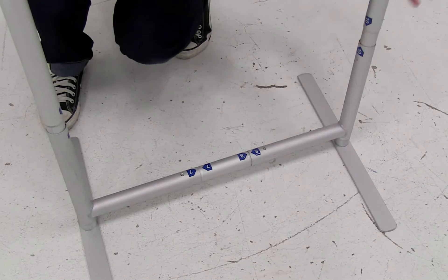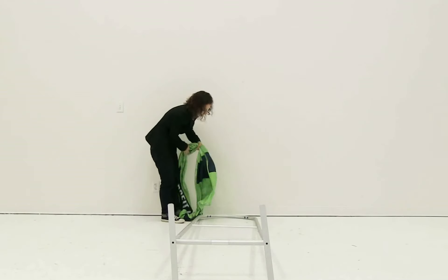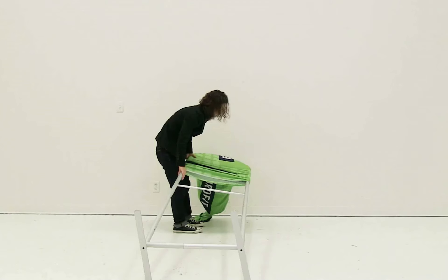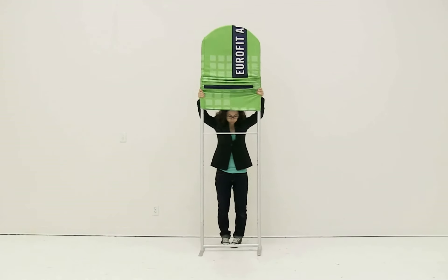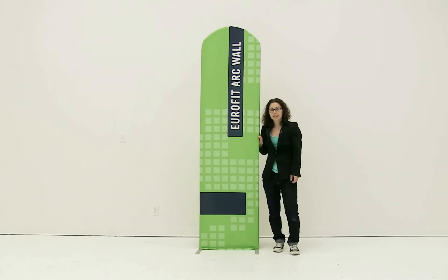Now that you have your frame connected, the next thing you're going to do is insert the graphic. I'm going to lay my frame down and then you're just going to insert it onto the top of the frame. You're going to align the seams of the graphic to the sides of the display. Once you've gotten your graphic about halfway on, you can lift up your display and then continue to pull down the graphic. And it's just that easy to set up your Eurofit Arc wall display.